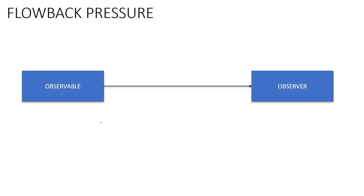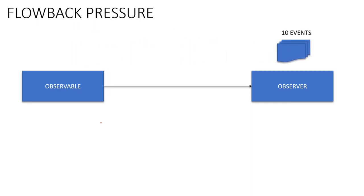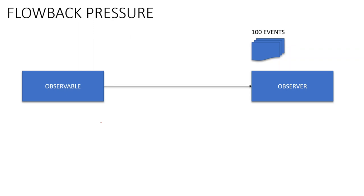Now let's understand flow back pressure. Suppose we have an observable and an observer. The observable gets 10 messages and pushes 10 events to the observer, which processes them successfully. But suddenly it gets 100 events and pushes them to the observer. The observer, due to its limited capacity, can only handle 10 messages at a time, leaving 90 events waiting. This could cause a crash in the system due to the surge of requests.